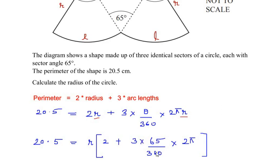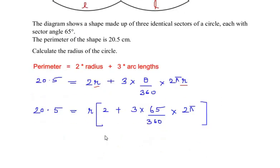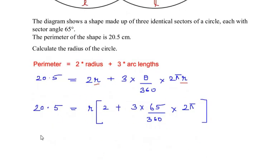So 65 over 360 times 2 pi. R is taken out. Now let us simplify this further. So we have 20.5 equals r times, let us see how much value we get for this bracket.